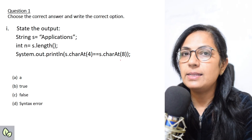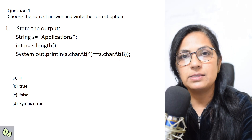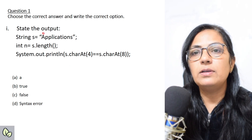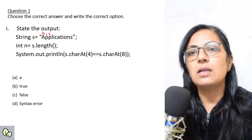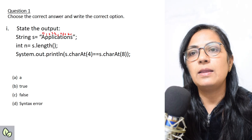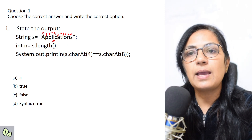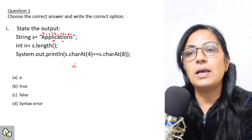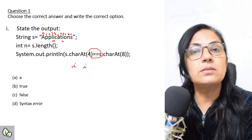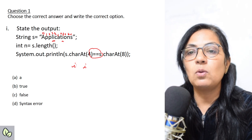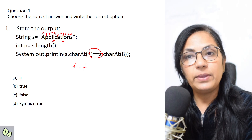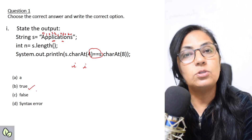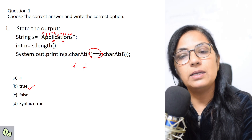Please pause the video, find the answer, and then resume to check your answer. Now, s.charAt(4) — in a string, the first character is stored at index 0. So at index 4, the character is 'i', and charAt(8) is also 'i'. The double equals operator checks for equality, so i == i is true. The output is true.